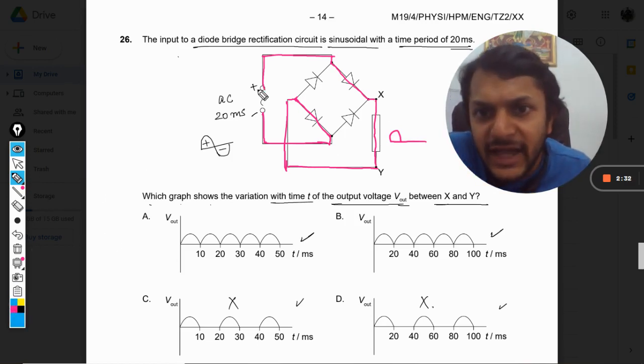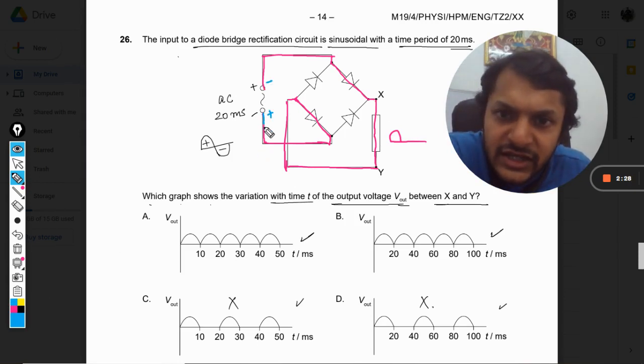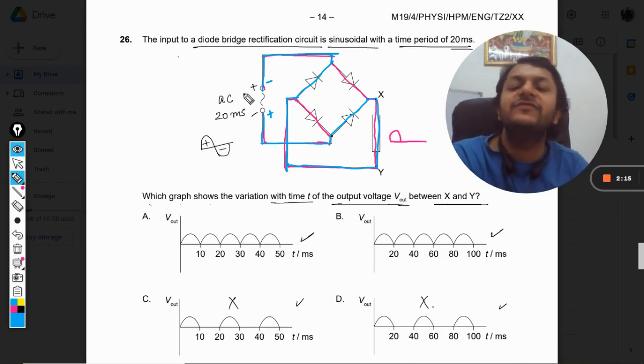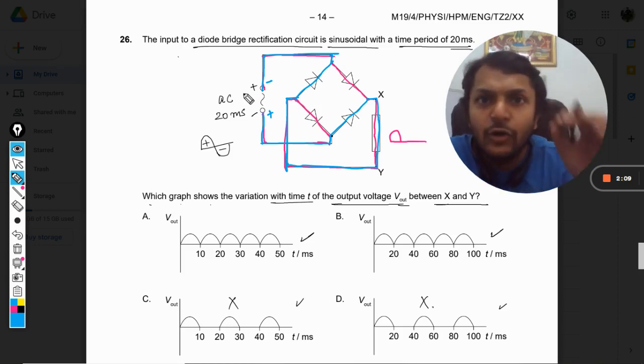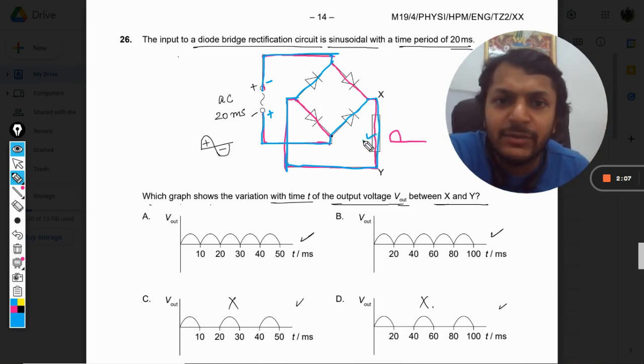And what will happen in the case of the next half revolution when this is negative and this is positive? The current will move like this through this, through this, and then through this and it will reach the negative junction not the positive value. So in both of the cases we see that the output voltage is available across XY.